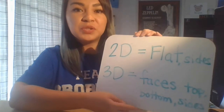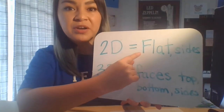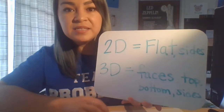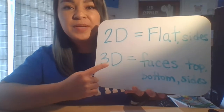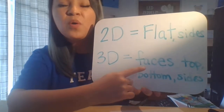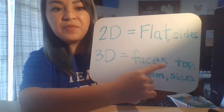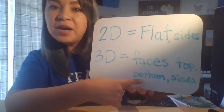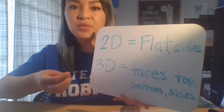Let me tell you what I mean. Yesterday with Ms. Cheung you talked about shapes like squares and rectangles. Those are called 2D shapes. 2D shapes are shapes that are flat and they have different sides to them. Today we are going to be talking about 3D shapes. 3D shapes have what we call faces and they have different sides — they have the top side, could have a bottom side, and they could also have sides all around.